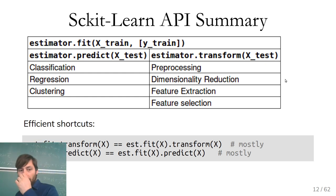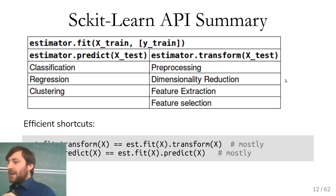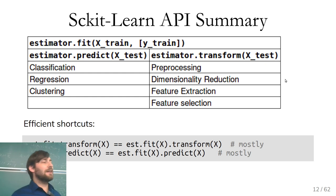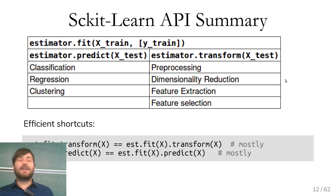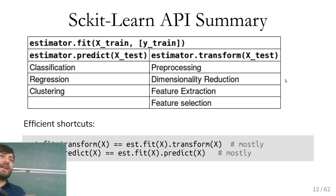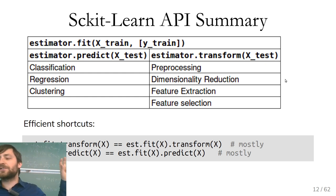Let me briefly revisit the scikit-learn API. All models have fit — if supervised, they take both X and y; if unsupervised, just X. If you want to predict an outcome — in classification, regression, or clustering — you use predict. If you want to create a new representation of your data — as in pre-processing, dimensionality reduction, feature extraction, or feature selection — you call transform. The outcome of transform is usually a two-dimensional array of features. These three — fit, predict, and transform — are really the core methods.